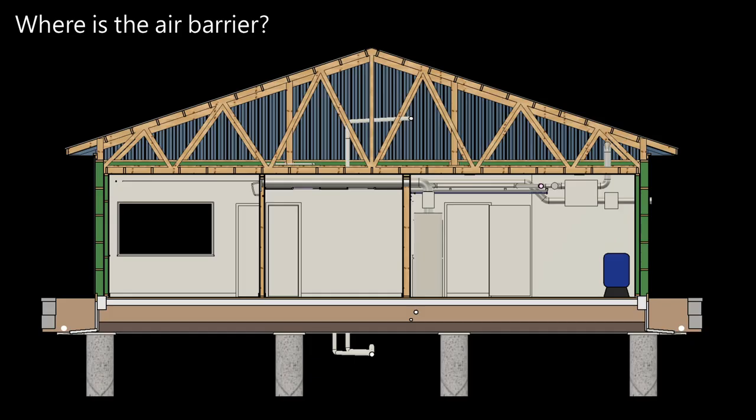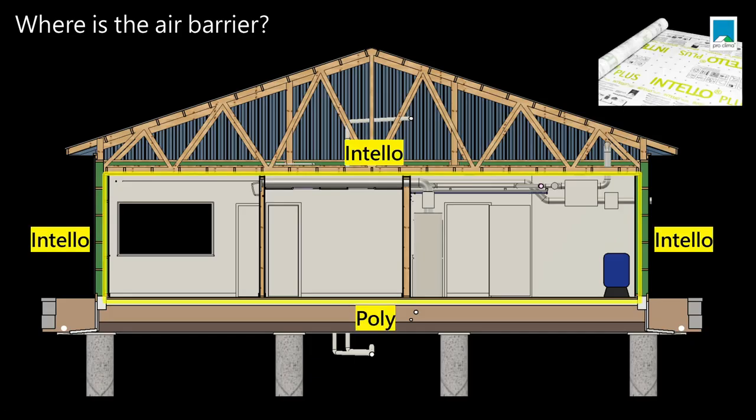Let's jump right into where the air barrier is. Here's the section of the house with the air barrier drawn in. In the walls, it is in the double wall, between the double walls. On the ceiling, it is above the drywall. And in the ground, it is between the solid insulation.